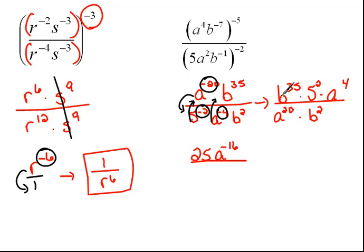And our b's, again, dividing, so we have to subtract the exponents, would be b to the 33 power. Now we have a negative exponent, which says that that a is in the wrong position. So the final answer here would be 25b to the 33rd over...